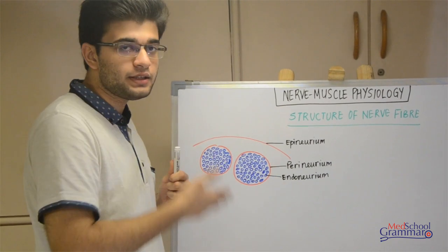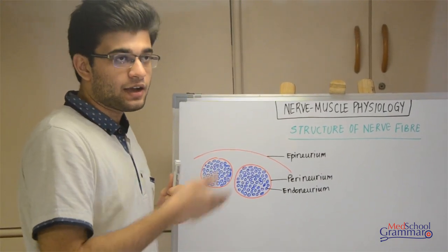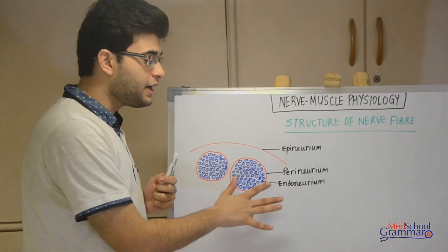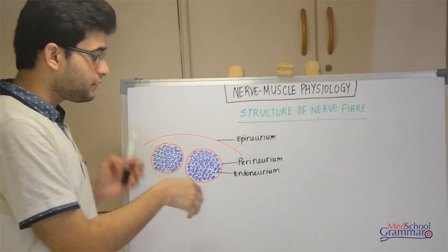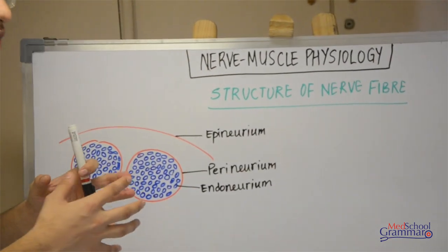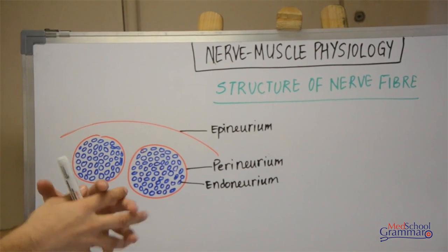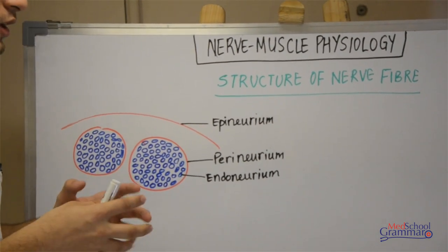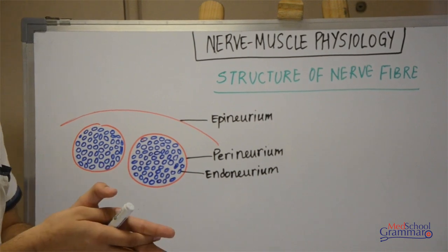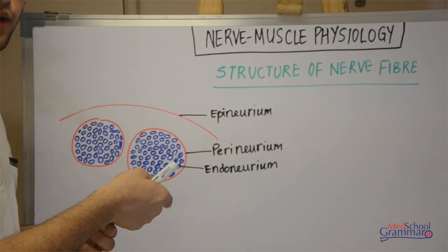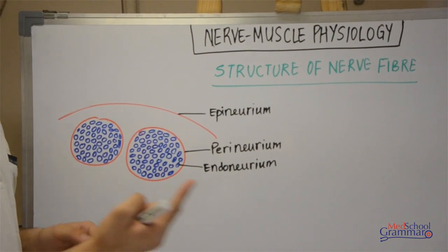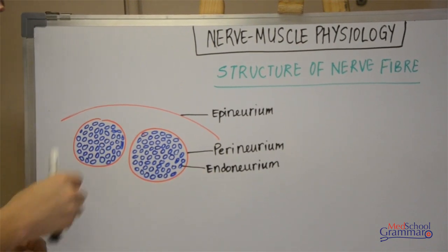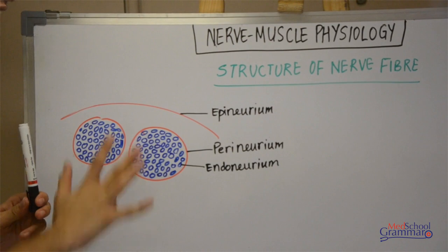Inside the perineurium are the nerve fibers. Each nerve fiber is surrounded by endoneurium, which consists of Schwann cells surrounding the axons. These nerve fibers are clustered together — that is the function of the endoneurium. These clusters form fasciculi, which are covered by perineurium, and multiple such perineuriums are found inside a single trunk, all further covered by epineurium.